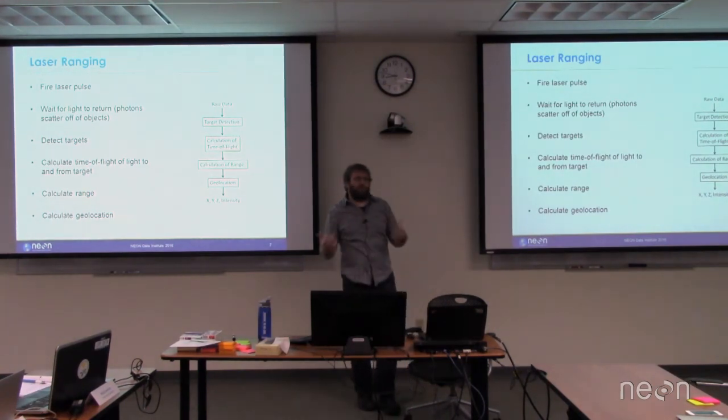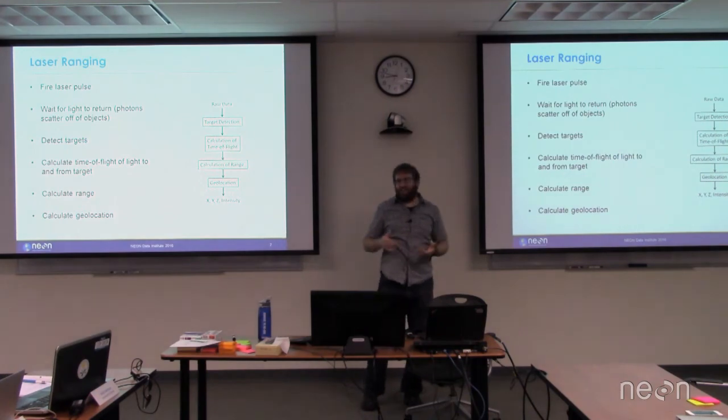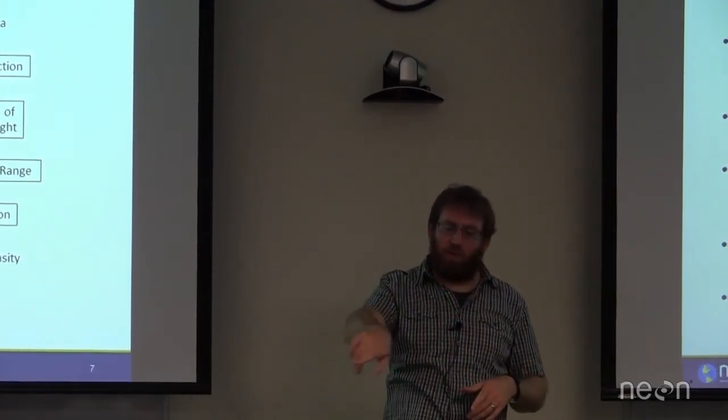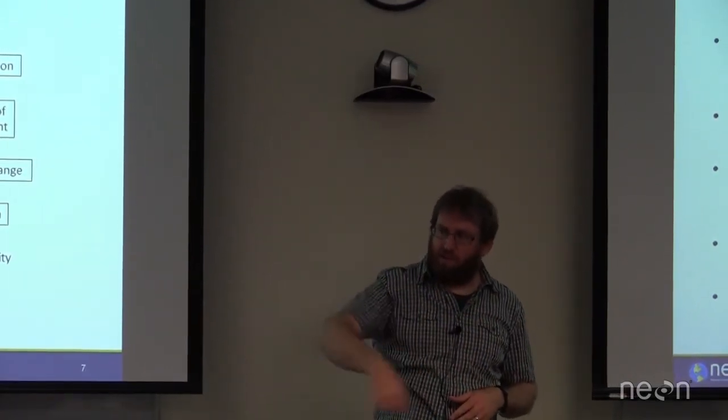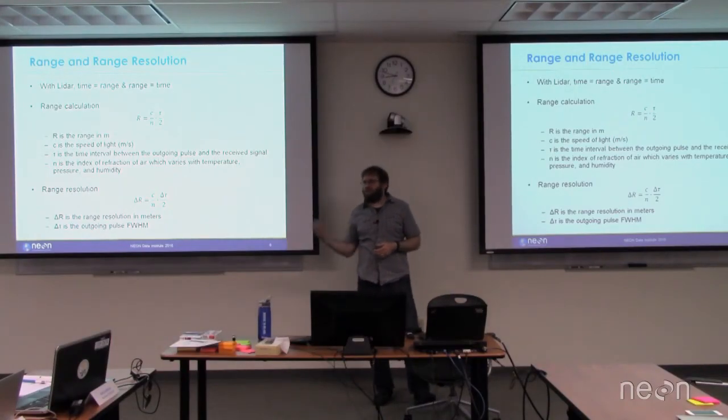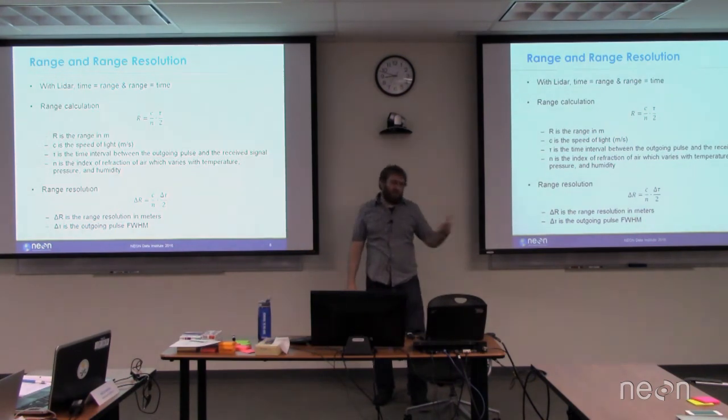The general process of LiDAR is you fire your laser, you record your signal, you do some sort of target detection. Once you've identified a target, you can look at the change in time between that outgoing pulse and the received pulse. You do some calculations, that converts that time of flight into a range. Then from the range, you have your GPS IMU and you can figure out what direction the scan mirror is pointed at, and that gets to your coordinates.